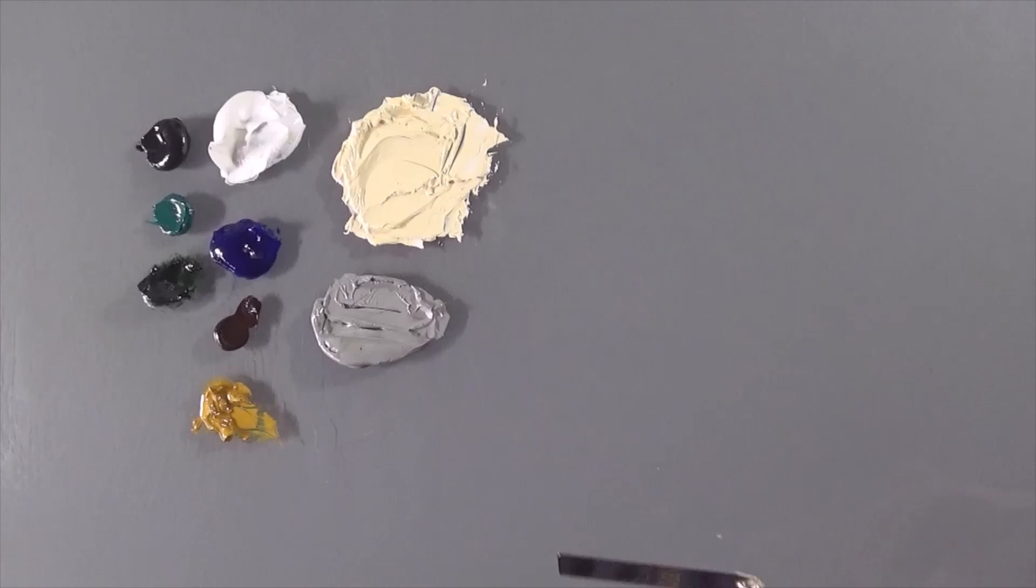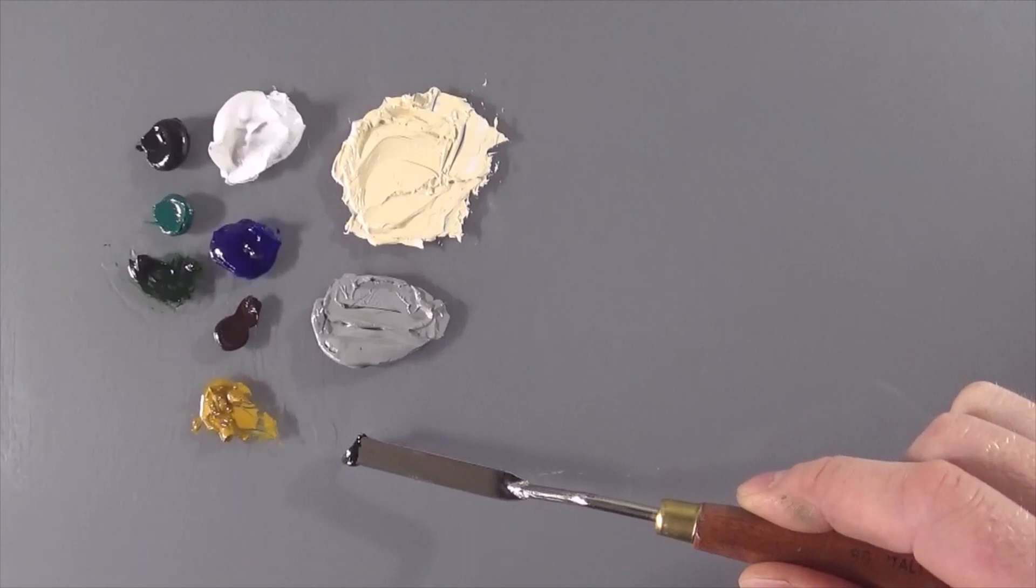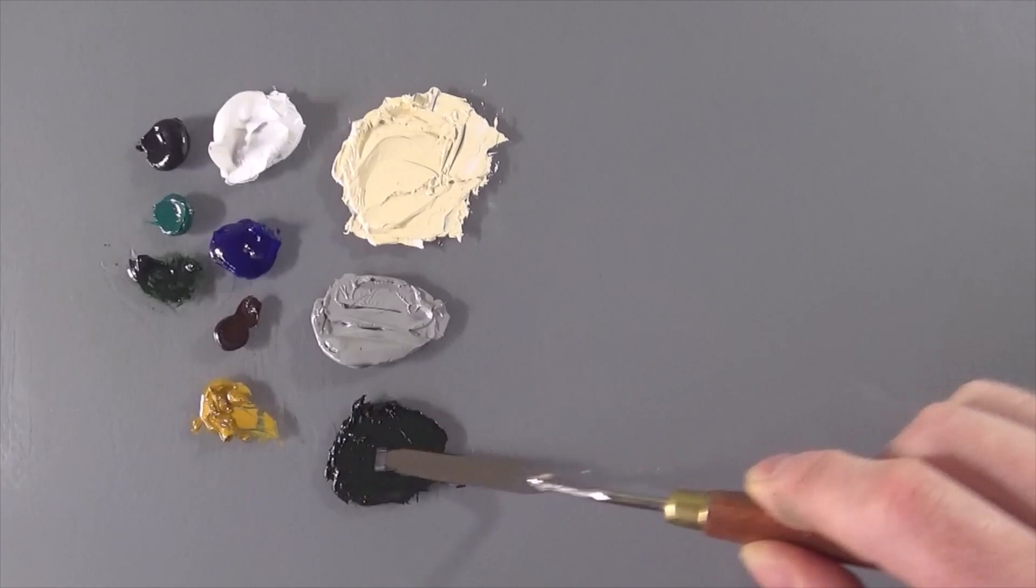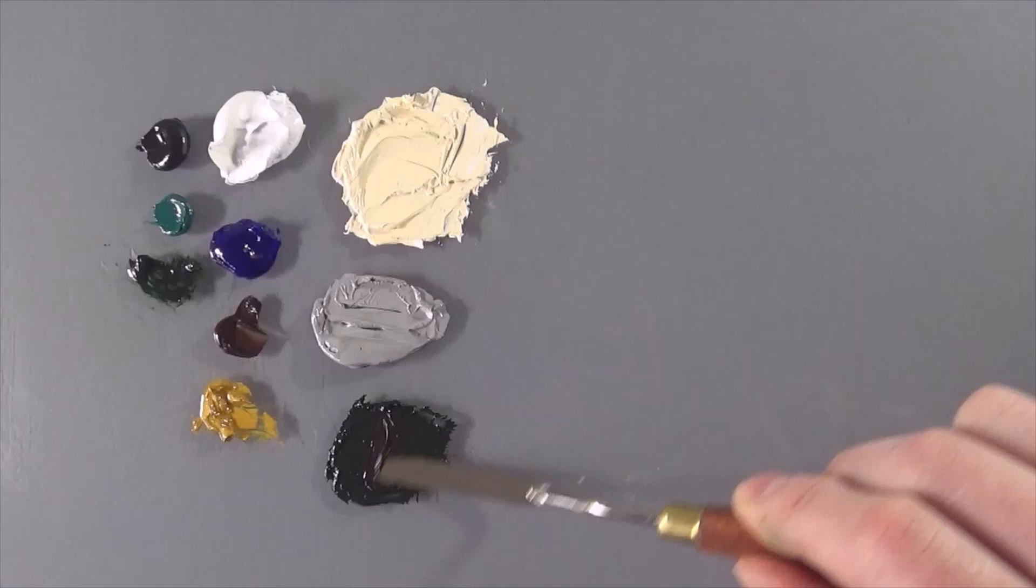I'm going to take some of the sap green, lovely transparent color, and we're just going to mix a little bit of burnt umber into that, just to warm it up. Still a lovely dark, but not quite as dark as the shade of the green that we're going to create for that foreground silhouette.